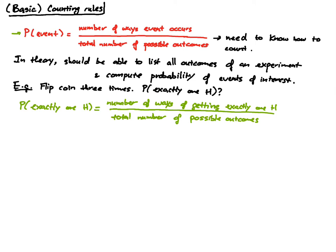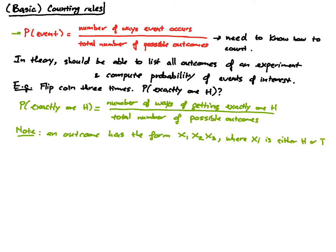This is a fairly simple problem where we are able to list the outcomes. An outcome of this experiment has the form (x1, x2, x3) where xi is either head or tail. So x1 is what you get on the first flip, x2 on the second flip, and x3 on the third flip.